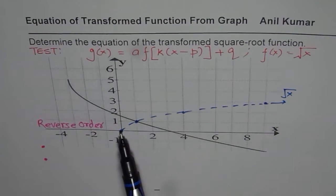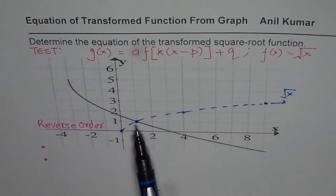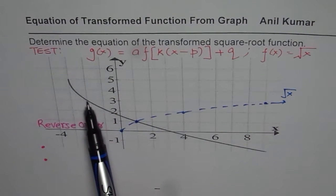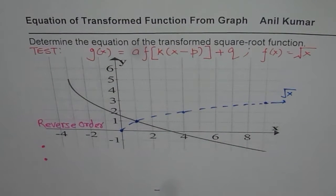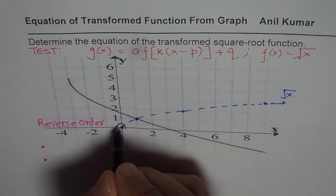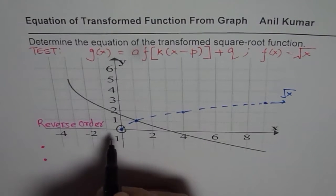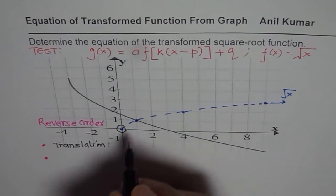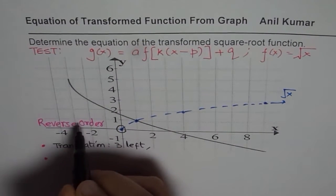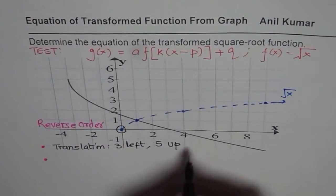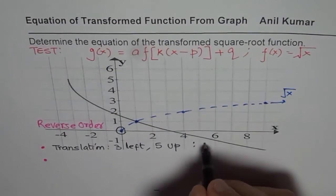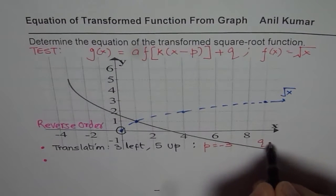Second, we also see it has been reflected, as it is not going up but going down. So that means a is negative, and there appears to be a stretch factor as well. Now let us summarize. Looking at the translation of the original point, which was at the origin, we notice it has moved three units left and five units up.